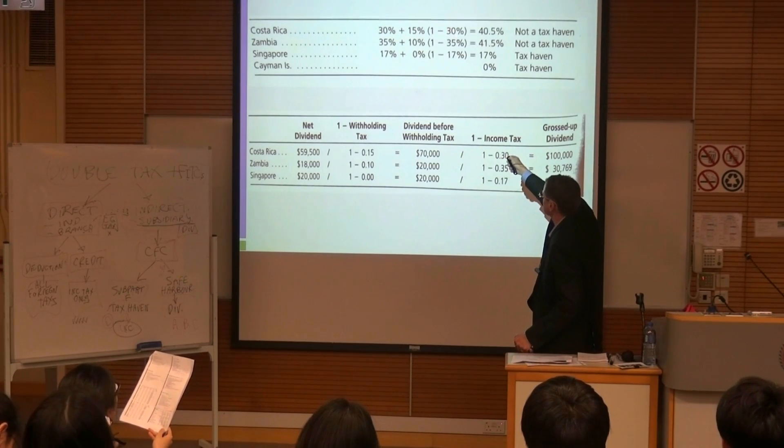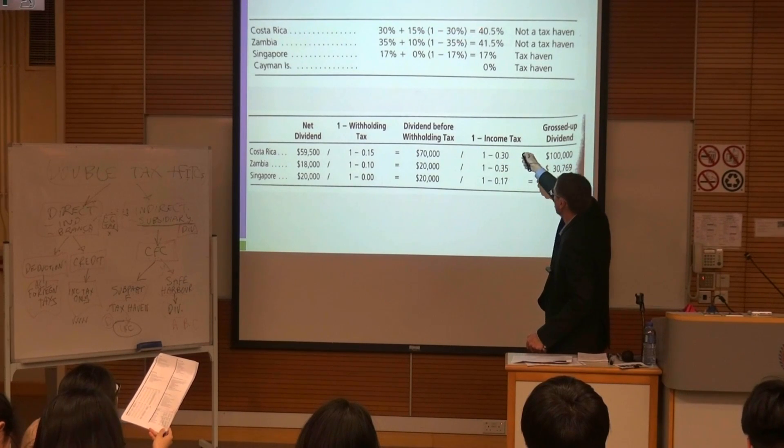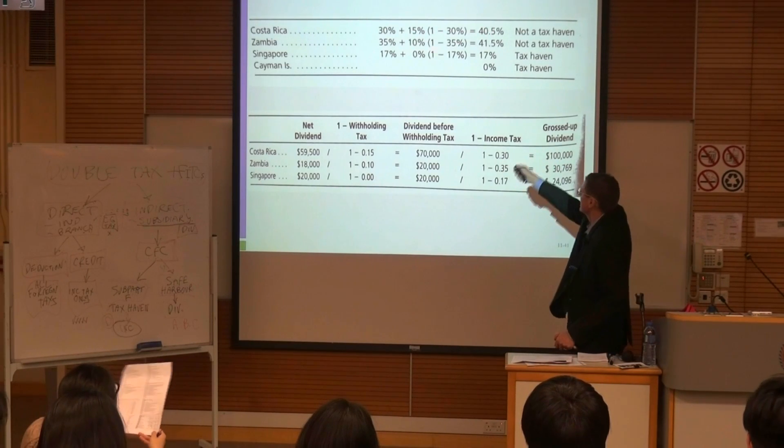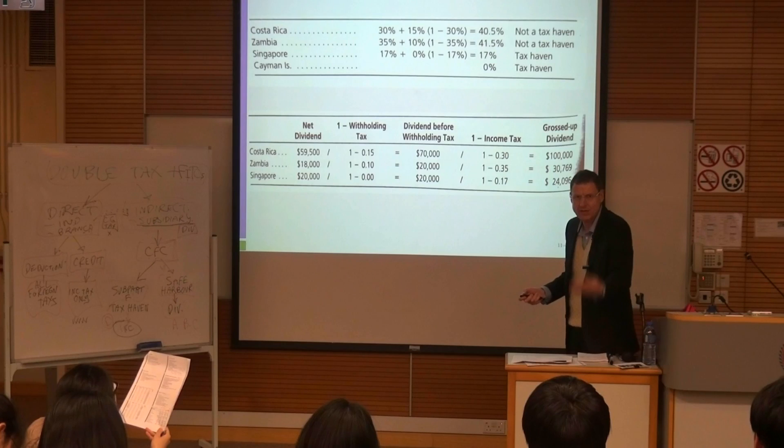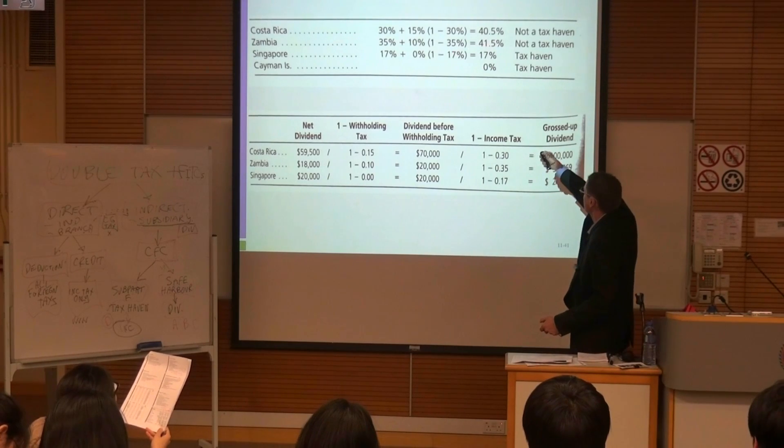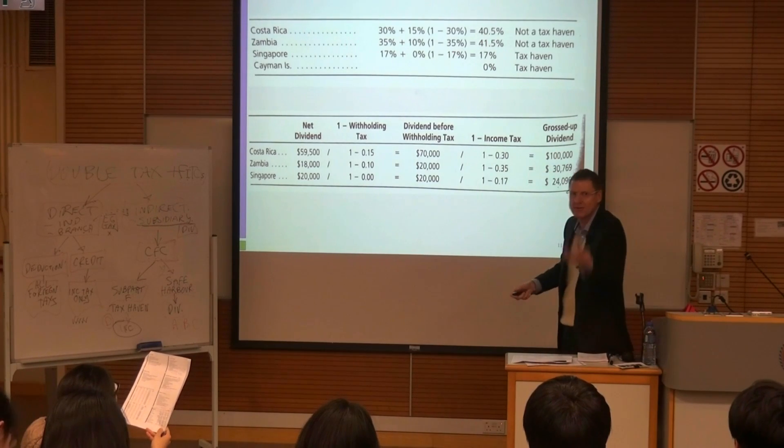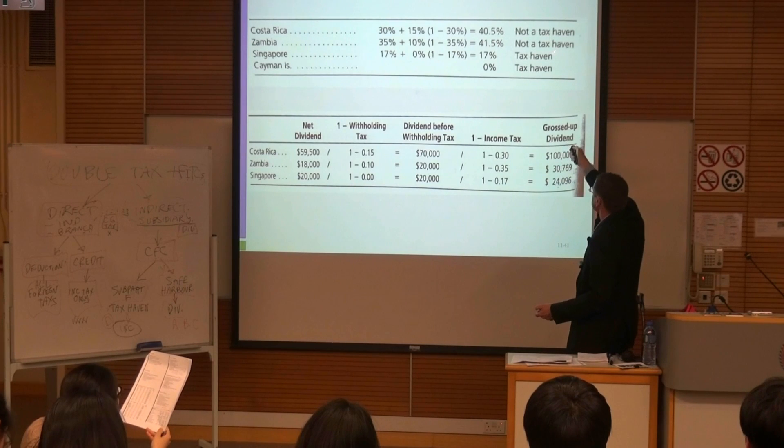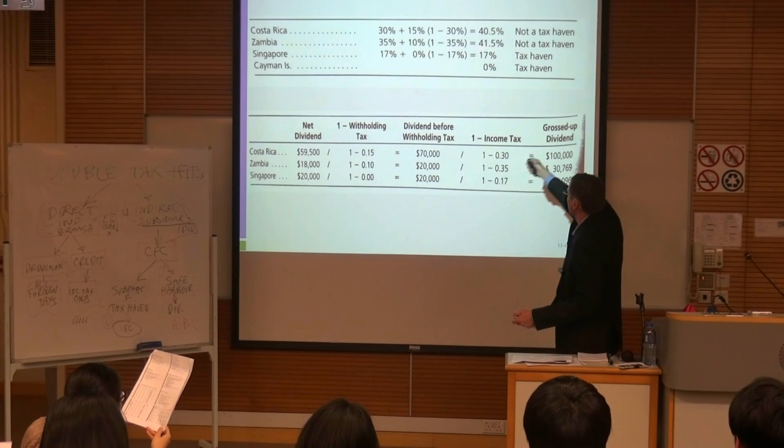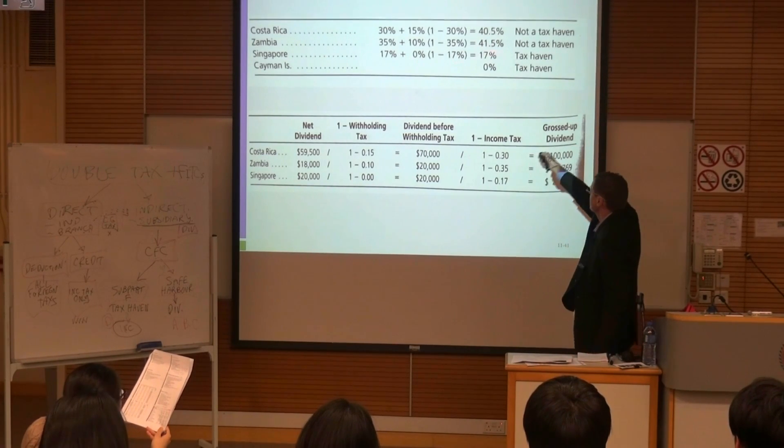It's on the grossed up income so that's why it's one minus the tax rate to work out. On average it's 40.5%, so that's more than the US tax rate.